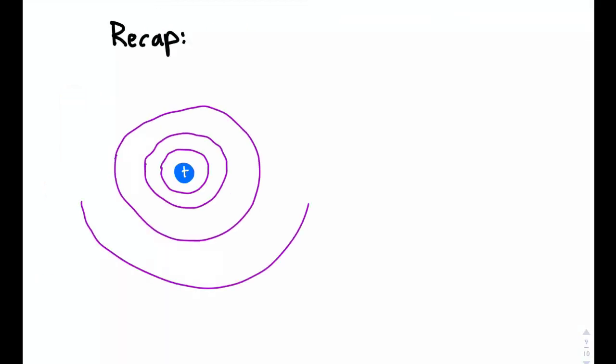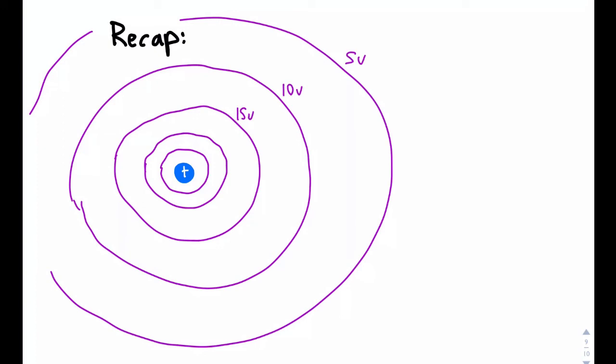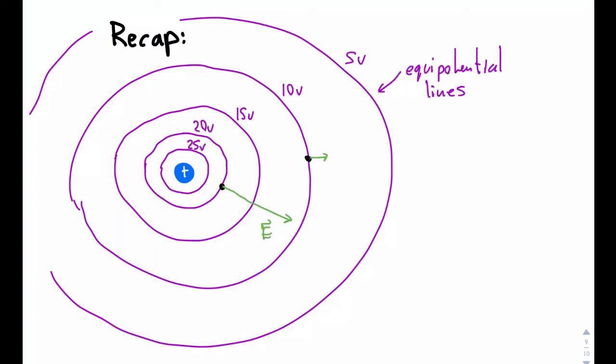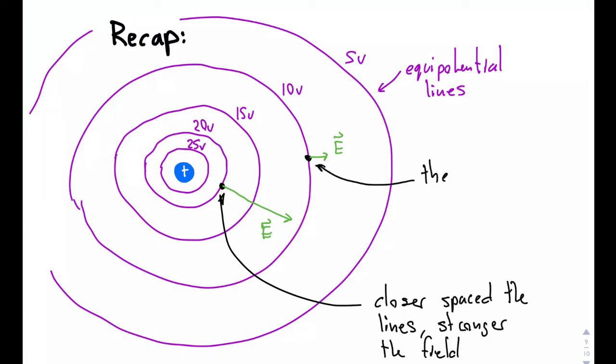In practical terms, when designing electronics, the electric potential is often easier to figure out than the electric field. So, if we can find the electric potential, we can determine the electric field and force on a charge, which then allows us to make sure that when you plug your computer into the wall, it doesn't blow up.